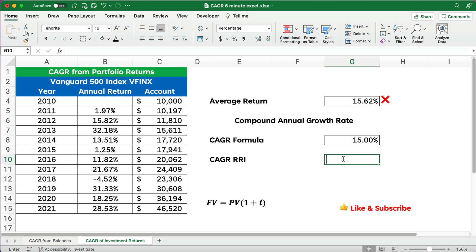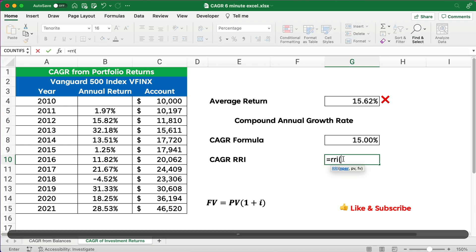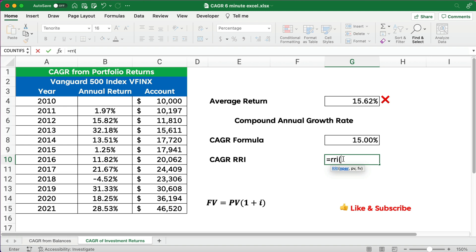RRI is a little bit quicker, so let's do RRI. Let's compare. RRI is going to be 11 years is the number of periods. Our present value is 10,000, and our future value is 46,000. Let's close my parentheses. So here we can do compounded annual growth rate in a quick way, and now you know how to do it.